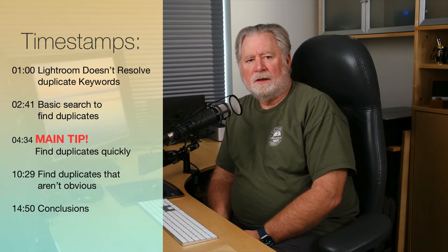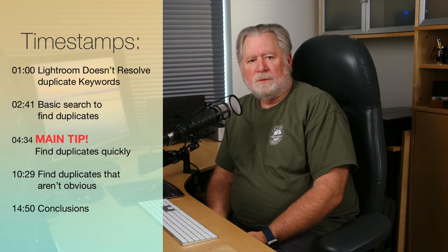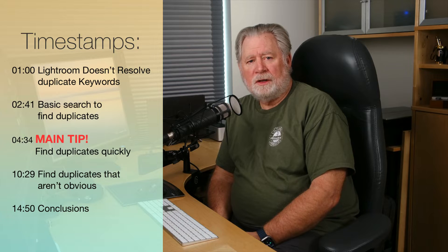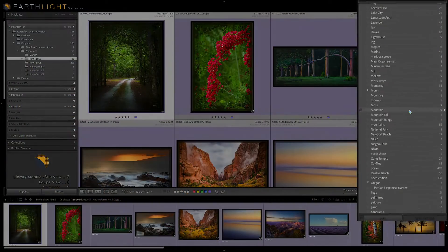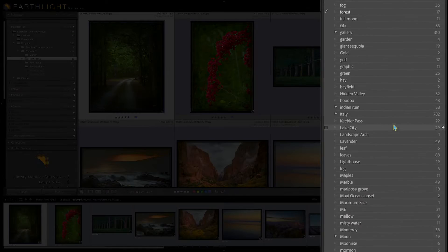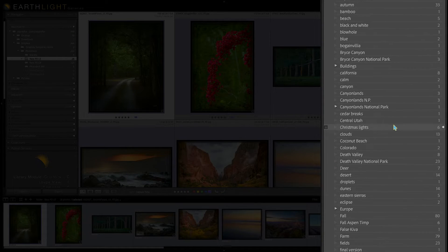Hey everyone, Wayne Fox here. Sometimes you end up with duplicate keywords in your Lightroom library. Mine's a mess right now. Take a look here and you'll see that all these keywords are actually already in my Lightroom library. The reason is I exported a bunch of files and imported them, and Lightroom wasn't able to identify these keywords down in the hierarchy because of the way I structure it.